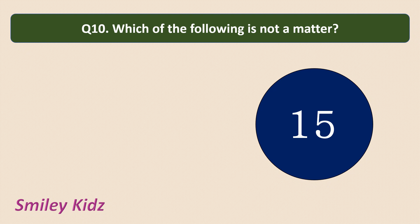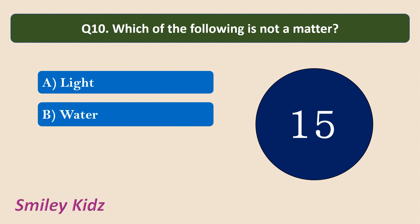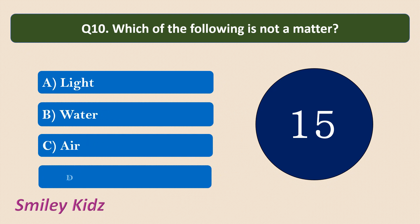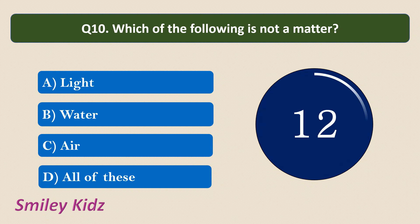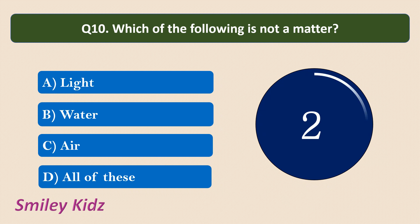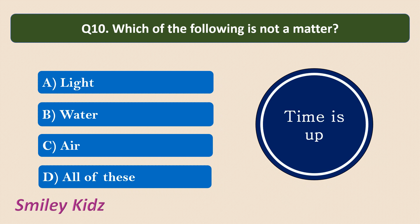Question number 10: Which of the following is not a matter? Options are: Light, Water, Air, All of these. Your time starts now. Your time is up. The correct answer is Light. Water is a matter; air is also a matter because they occupy space and have mass. But light is a form of energy, so the answer is Light.